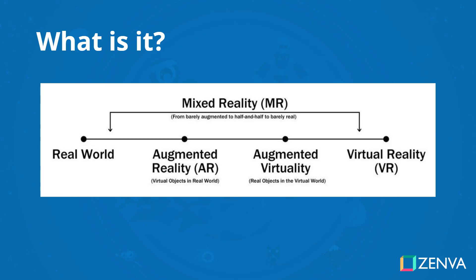And then there is augmented virtuality. This is a lot less common than AR and VR, and what this does is it places real world objects in the virtual world. And then over on the right hand side we have virtual reality, which is basically an entirely virtual world — that is what you can see and that is what you hear.